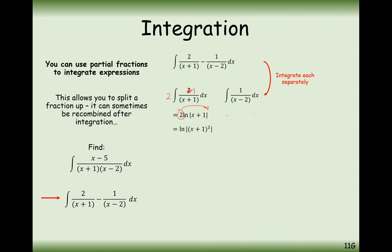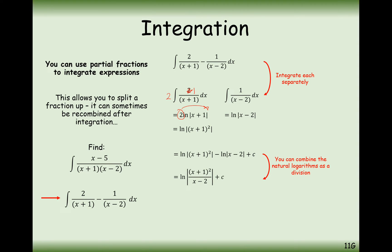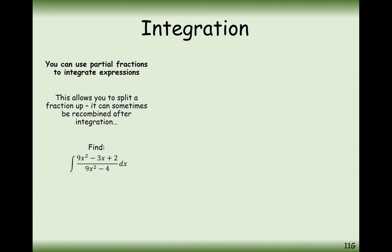Then we subtract the integral of the other partial fraction, giving ln(x minus 2). Since we're subtracting one logarithm from the other, we can divide inside the brackets — so it's ln of [(x plus 1) squared divided by (x minus 2)], plus c. That's how we integrate using partial fractions: use partial fractions first and then integrate those partial fractions second.